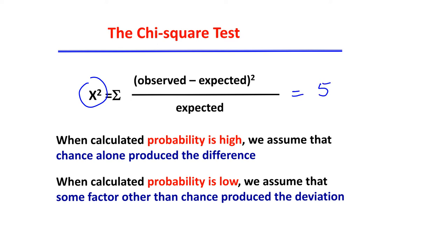That number of 5 is hypothetical. Once you have your chi-square number, you determine the probability associated with it. You determine it from the chi-square distribution table, which we will do in the next slide. Let's assume that the probability associated with this number is high — in that case, you can assume that chance alone produced the difference.